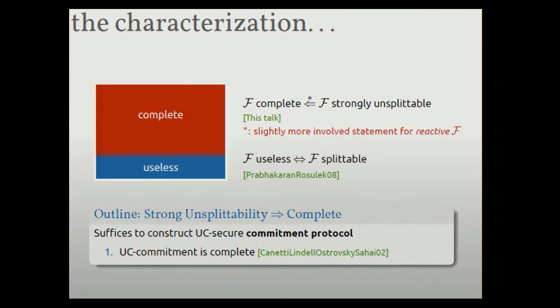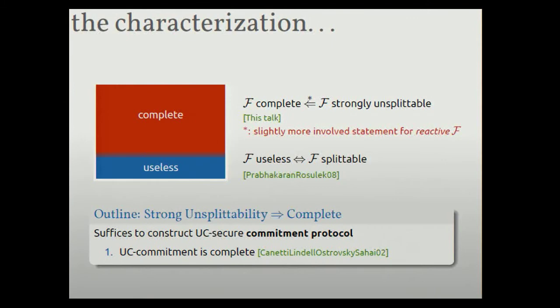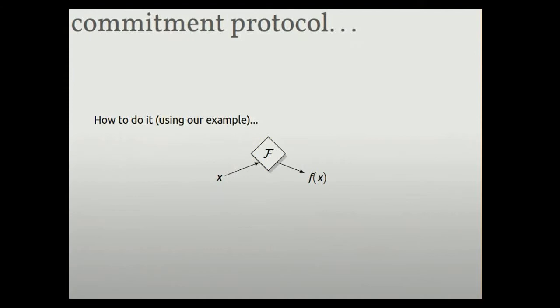So this is the theorem that I want to talk about. So how do we show that a trusted setup is complete? Well, from the nice result CLOS, the well-known result, it just suffices to build a commitment protocol. Okay? So I'm going to take a strongly unsplittable F and show that you can always build a commitment protocol out of it. Okay? And I'm going to do it using the example that I showed earlier. So I hope you haven't forgotten what this does.